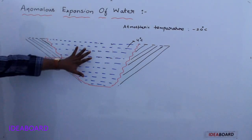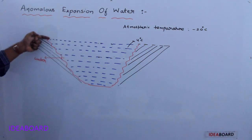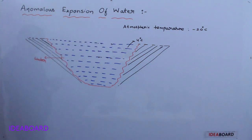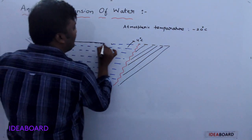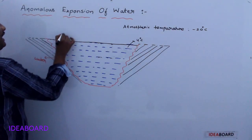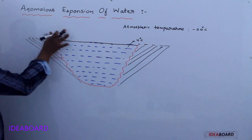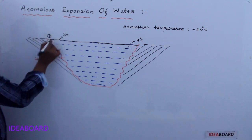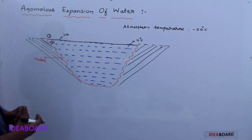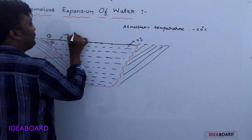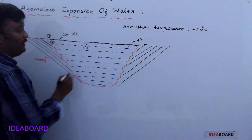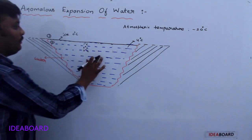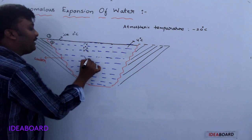At this stage, the water molecules on the surface of the lake cool further to 0 degrees Celsius. When they cool to 0 degrees Celsius, they freeze into ice. So region 1 on the surface is ice, and region 2 below it is water. The ice is at 0 degrees Celsius; just below it layers are at 1, 2, and 3 degrees Celsius, while the remaining entire water is at 4 degrees Celsius.